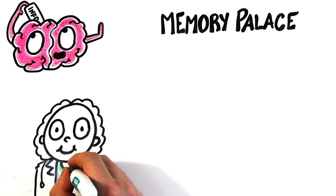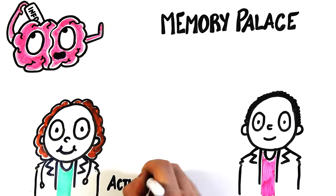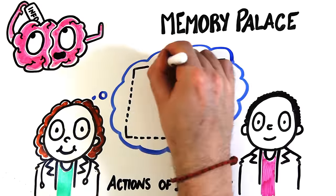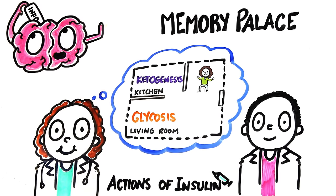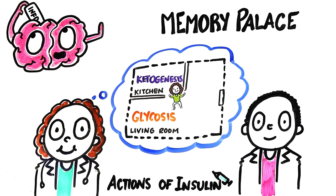One study had medical students create memory palaces to help them remember the actions of insulin. In this example, you might store glycolysis in your living room and ketogenesis in the kitchen. Then you can mentally travel through your house to recall each room.